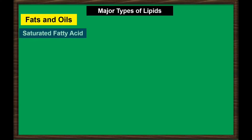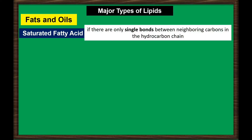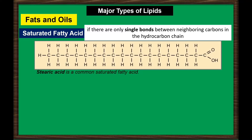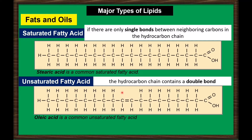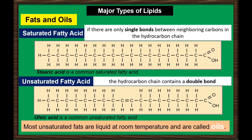In a fatty acid chain, it is saturated if there are only single bonds between neighboring carbons in the hydrocarbon chain. An example of a saturated fatty acid is stearic acid, which is saturated with hydrogen. In an unsaturated fatty acid, the hydrocarbon chain contains a double bond; oleic acid is an example. Most unsaturated fats are liquid at room temperature and are called oils. If there is one double bond in the molecule, it is known as monounsaturated fat — for example, olive oil. If there is more than one double bond, it is known as polyunsaturated fat — for example, canola oil.